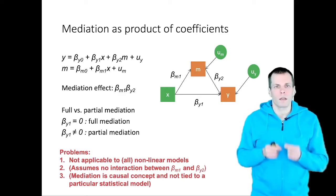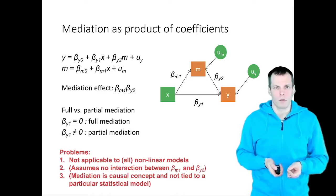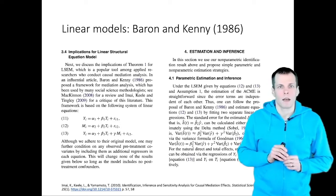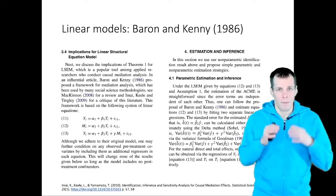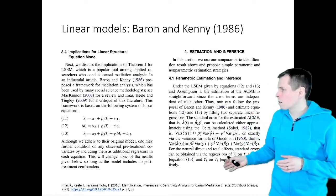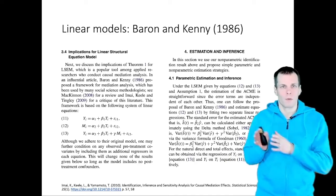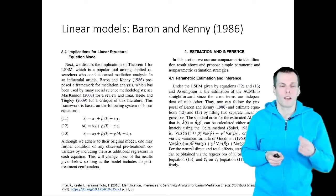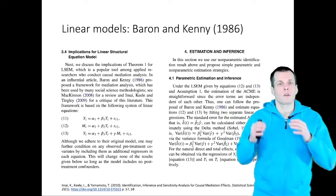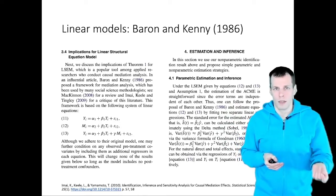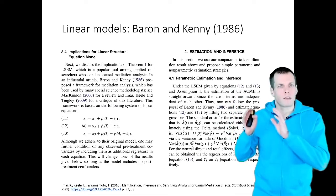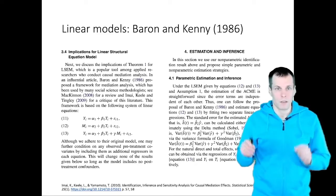Before we look at how to estimate non-linear mediation models, it's worth noting that for linear models the Baron and Kenny — or product of coefficients — approach is still valid. This article by Imai and co-authors, probably one of the most cited sources on estimating non-linear mediation models, still recommends the product of coefficients if your model is linear. How we check assumptions has evolved since Baron and Kenny was published in 1986, but the basic idea of multiplying two paths together remains the same.